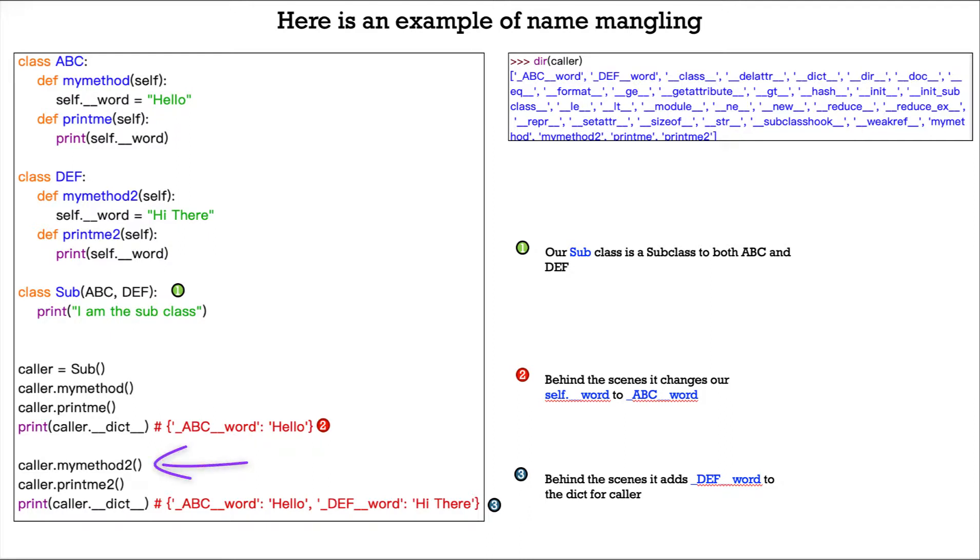Then we can do the same caller.myMethod2. Caller is still an instance of sub, so caller.myMethod2 now is pointed to method 2 in the DEF class, and then caller.printme2, same thing, in the DEF class.